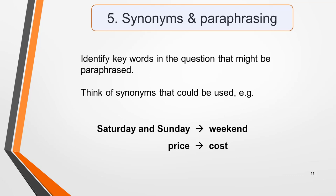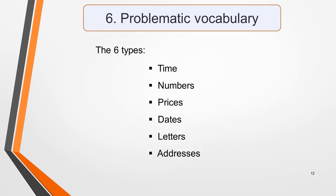There are six types of vocabulary that can cause particular problems for students, and some of them will almost certainly be present in table completion questions. The six types are time, numbers, prices, dates, letters and addresses. You must be able to recognise them in speech and write them correctly in your answers. I've written a whole lesson on this topic, including eight listening exercises, to help you recognise and learn these types of vocabulary. I've put a link to it in the notes below this video.